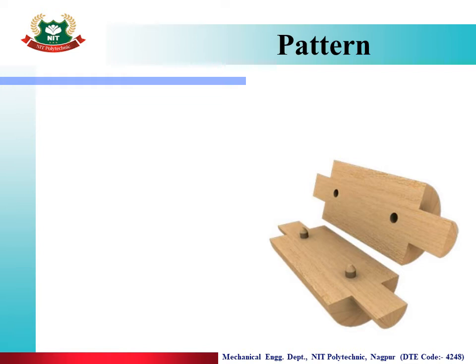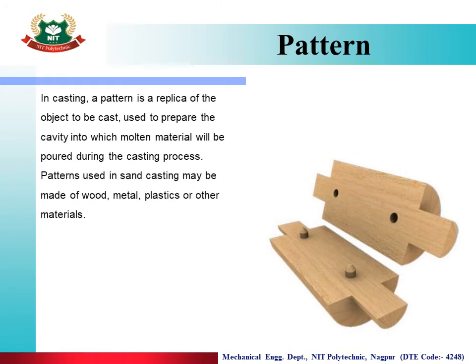In the casting process, the pattern is a very important element. A pattern is a replica of the metal object or casting product. In casting, a pattern is a replica of the object to be cast, used to prepare the cavity into which molten material will be poured during the casting process.